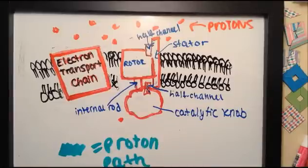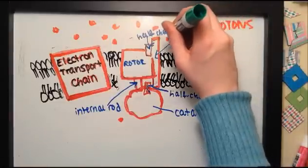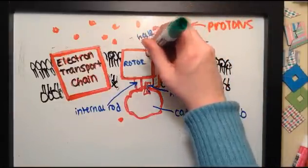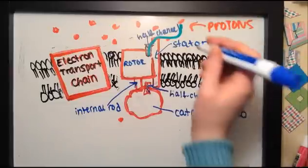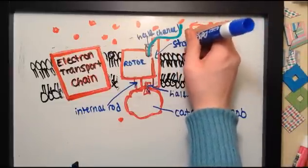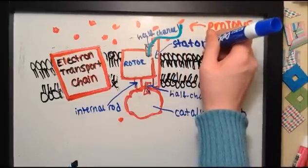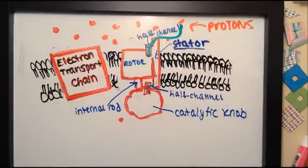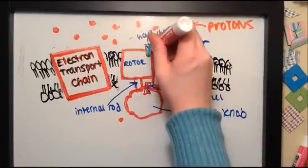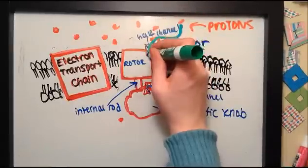I'll use this greenish color to trace the proton path. First, protons follow the concentration gradient and flow into the stator. The stator anchors the whole thing into the membrane. Once the rotor starts spinning, they'll need the stator to keep it in place.